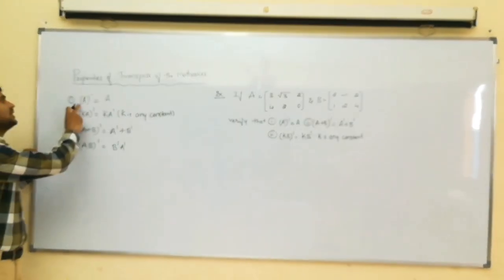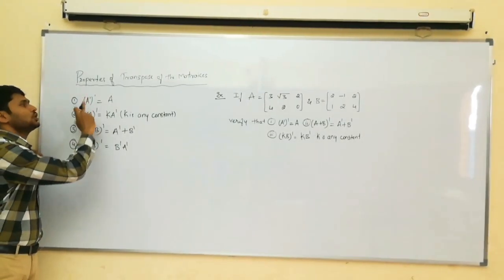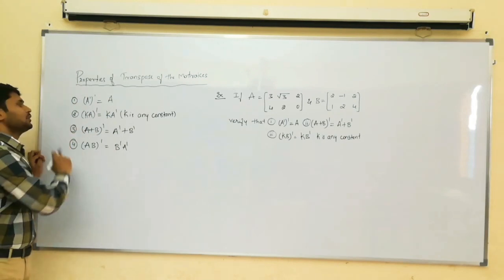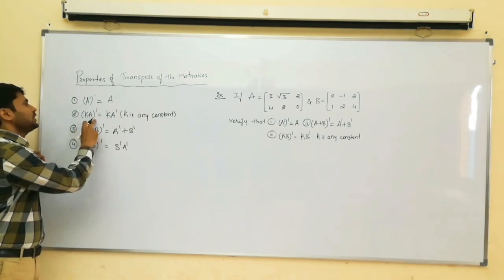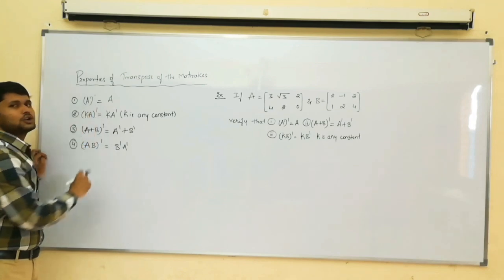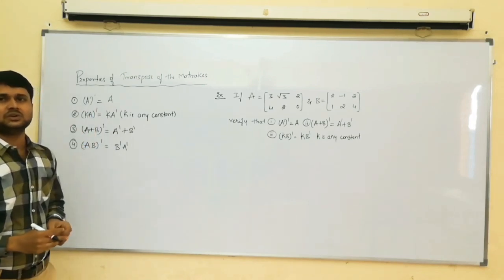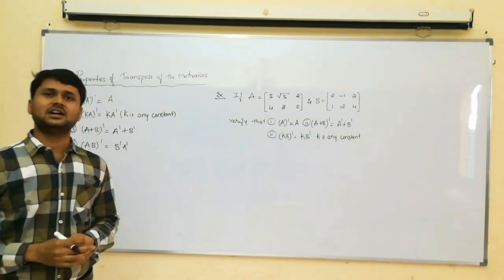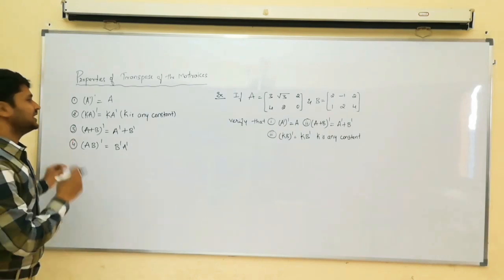First property: A transpose, whole transpose, is equal to A. Second property: K into A, whole transpose, is equal to K into A transpose. Here K is any constant.